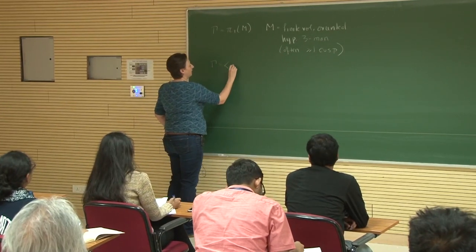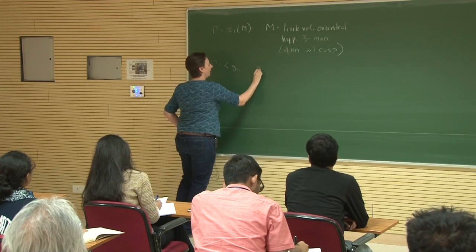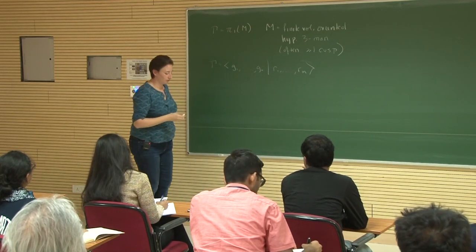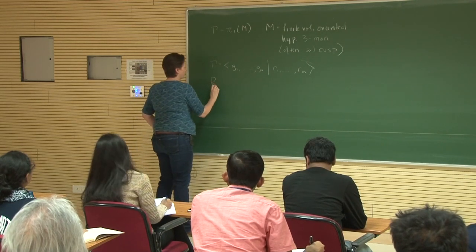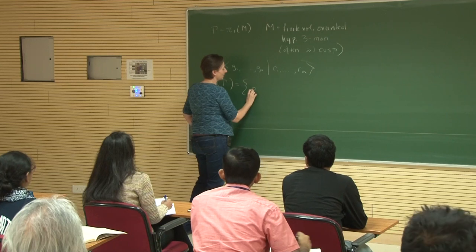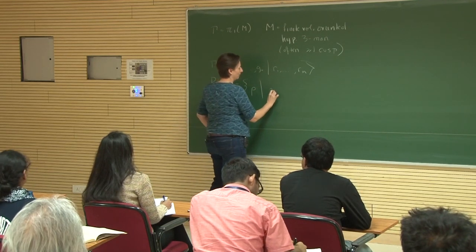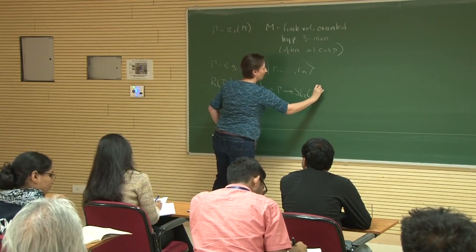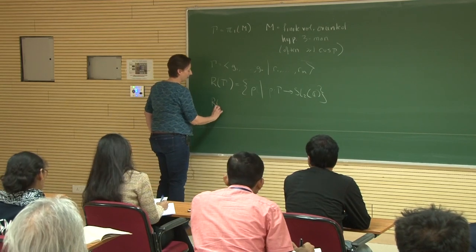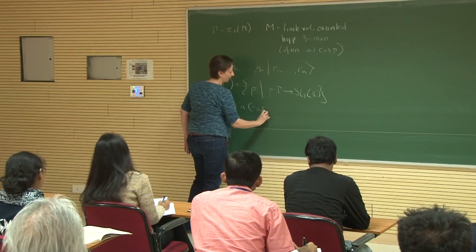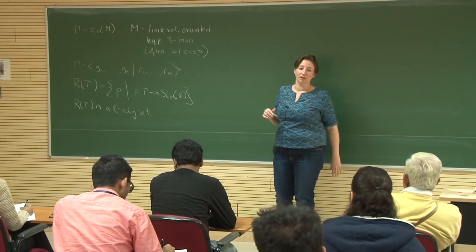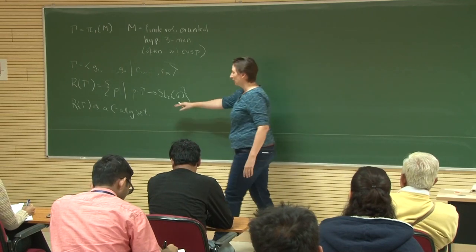Let's say gamma has N generators and M relations. I want to very concretely tell you what the SL₂ℂ representation variety looks like. This is the set of all representations rho from gamma to SL₂ℂ. And there's a very concrete way to see that R(gamma) is a complex algebraic set. Showing you in terms of matrices will enable you to get a better feeling for what this object looks like.